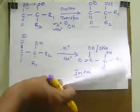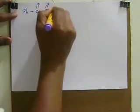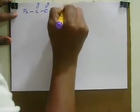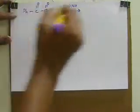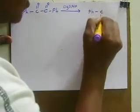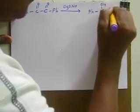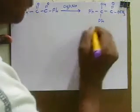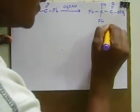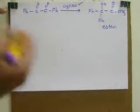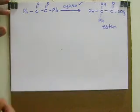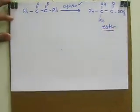Now let's discuss the features of this rearrangement. First: instead of using a normal base like KOH or NaOH, if we use sodium methoxide (CH3ONa), then the product will be Ph-C(Ph)(OH)-C(=O)-OCH3 — an ester structure. So if we use alkoxides as the base instead of a plain hydroxide base, we will get an ester as the final product.